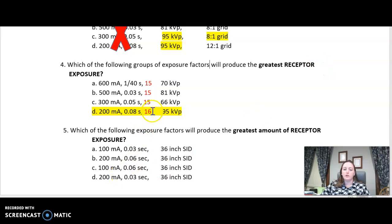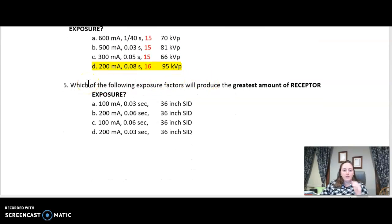So greatest receptor exposure, look for the greatest MAS. So you will have to calculate these out unless you're really good with math in your head, which I'm not. So number five, which of the following factors will produce the greatest amount of receptor exposure. Again, what am I looking for here? MAS is my main controller. So that's what I'm going to look for first. I'm going to calculate out my MAS. So this one is three, this one is 12, this one comes out to six, and the last one is six. So I have three MAS, 12 MAS, six MAS, six MAS. Then I also have some SIDs. So source to image distance. Will this have an effect on my receptor exposure? Yes, but they're all the same. So they're just there for fun, just to distract you. Greatest receptor exposure, highest MAS is your option.